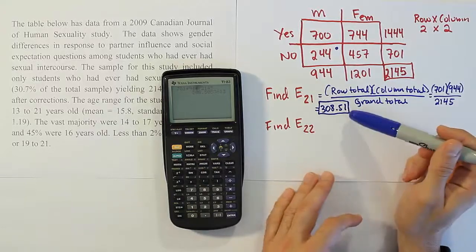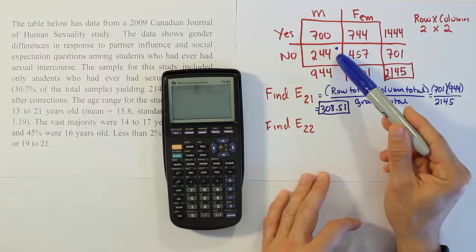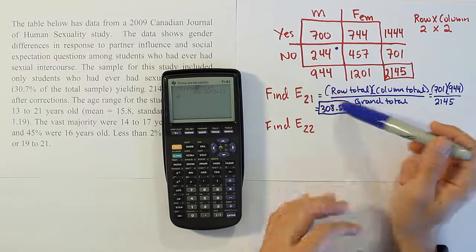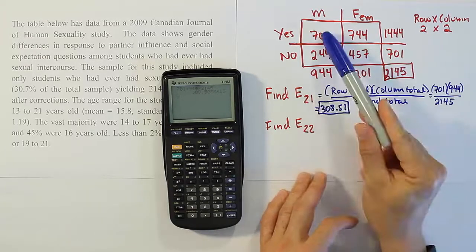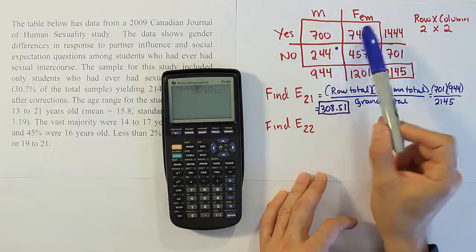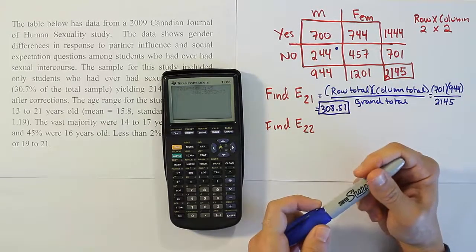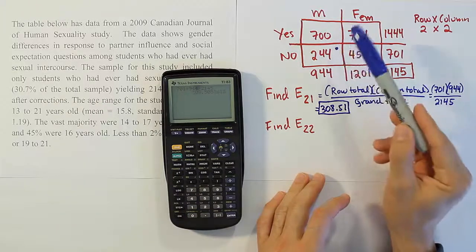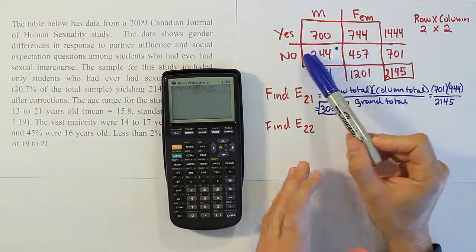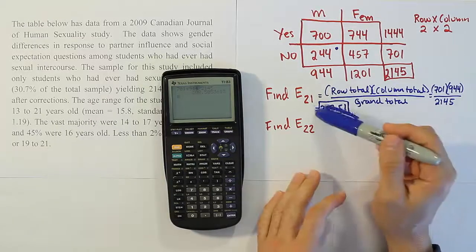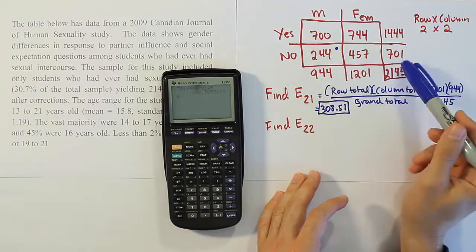So remember how to interpret this. This is what we expected to see in this cell if we have the assumption that the data is independent. That means males and females in condom usage. In other words, gender in condom usage is independent. They do not depend upon one another. So basically what we're saying is that it would be just as likely for a male to not use a condom as a female not to use a condom.